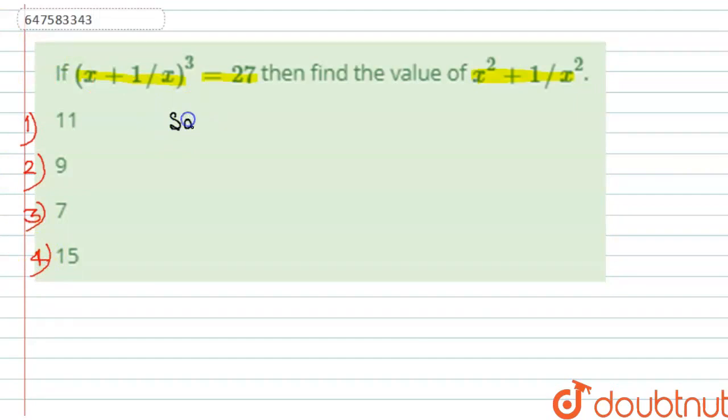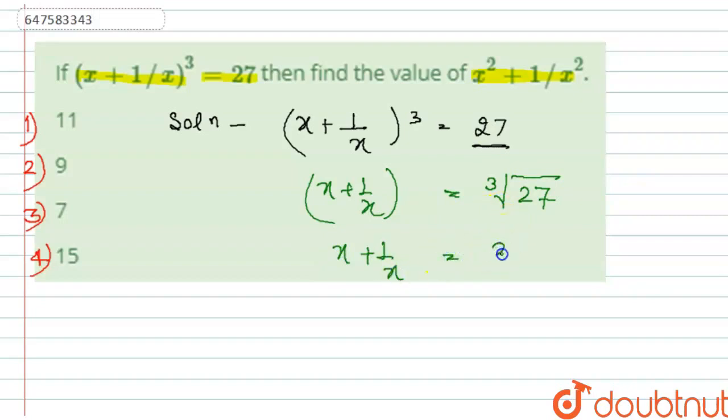We will solve using the basic method. In the solution, we can see the question. x plus 1 by x cube is equal to 27. And 27 is 3 cubed. So, x plus 1 by x value is equal to the cube root of 27. We can find that x plus 1 by x will be equal to 3.